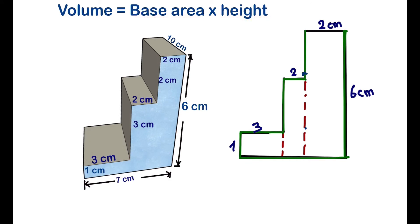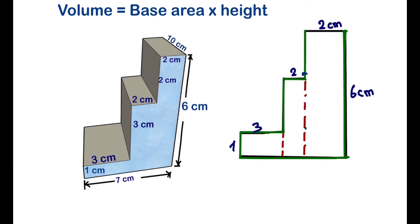To calculate the base area, we can separate the shape into three rectangles. Our first rectangle has dimensions two and six. So two times six is twelve.